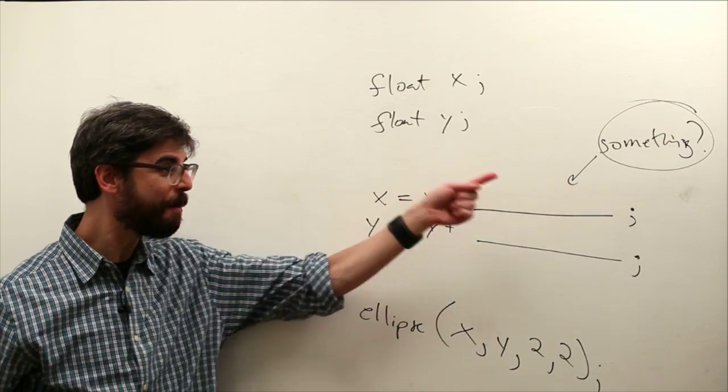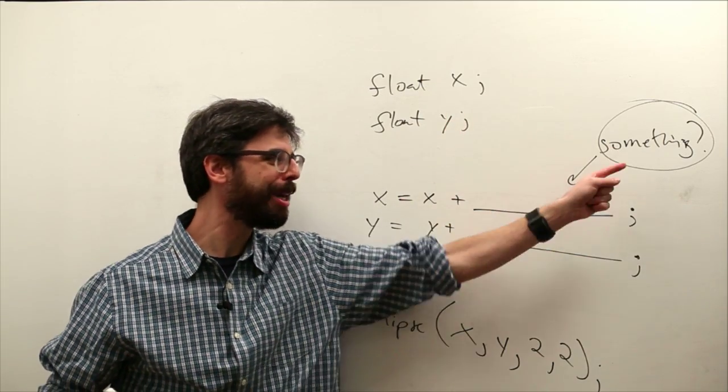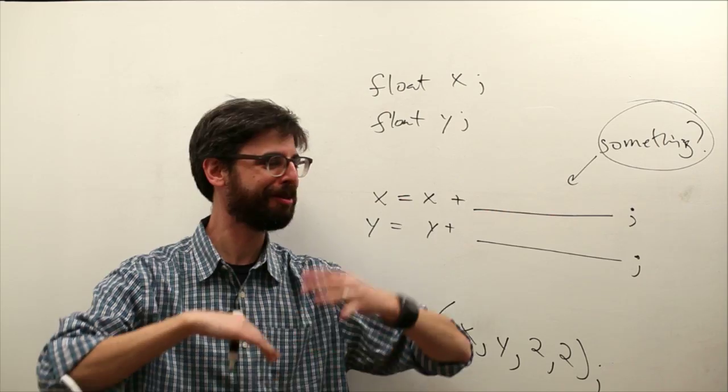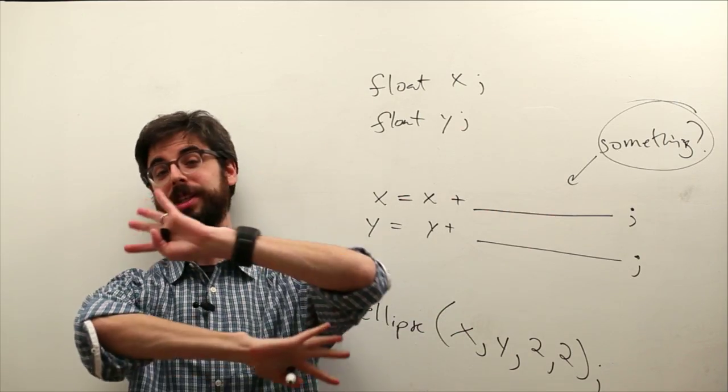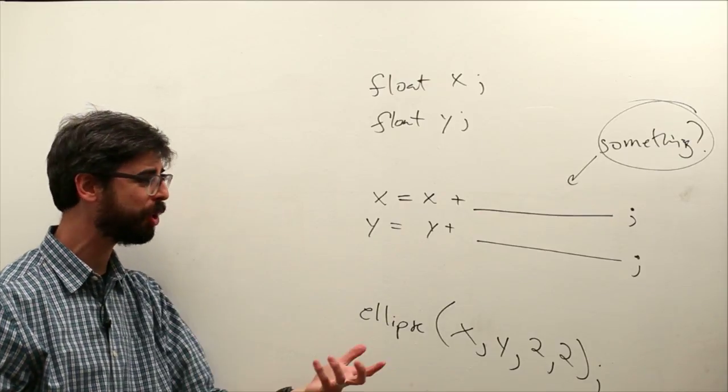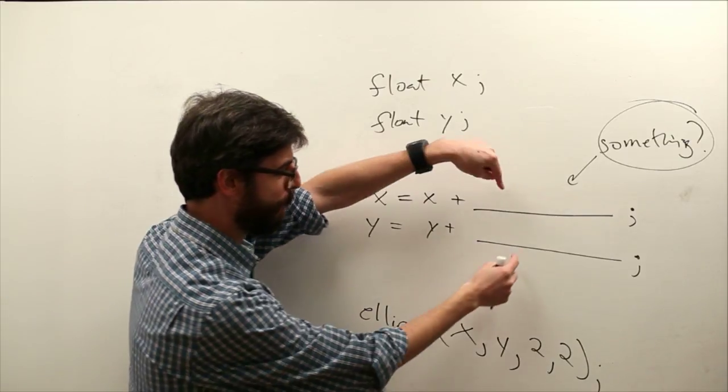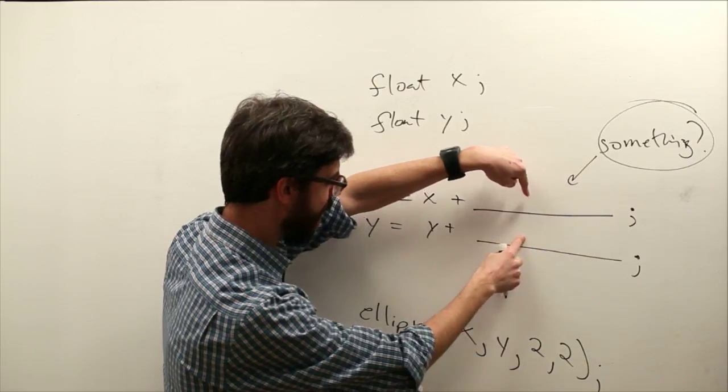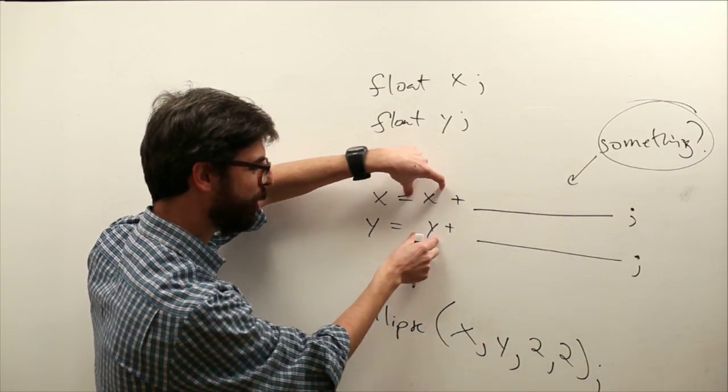y equals y plus something. And by the way, this something question mark, this is the question we want to answer in video after video and example after example over this entire series. Every program that we're going to look at with more and more sophisticated motion really just comes down to putting more and more interesting stuff in here. How do we change that object's location over time?